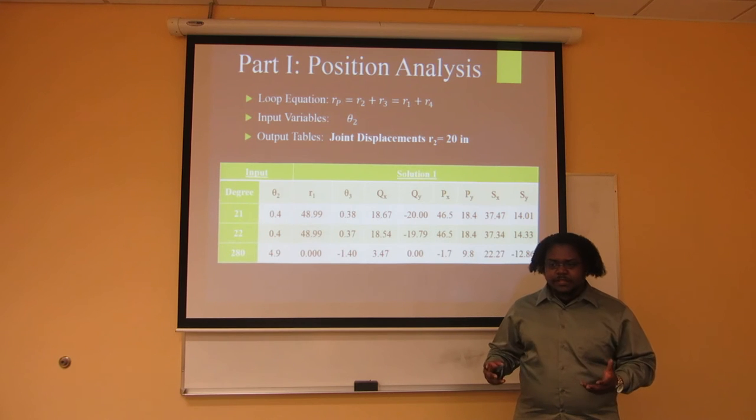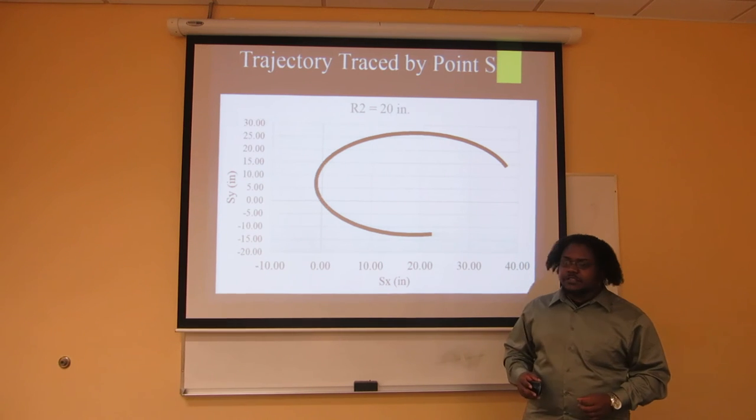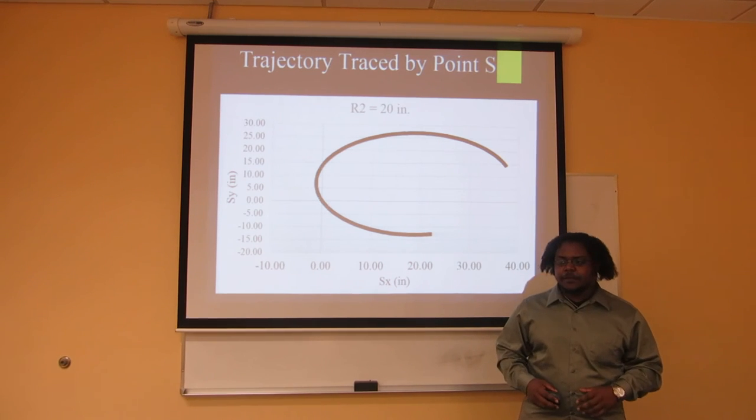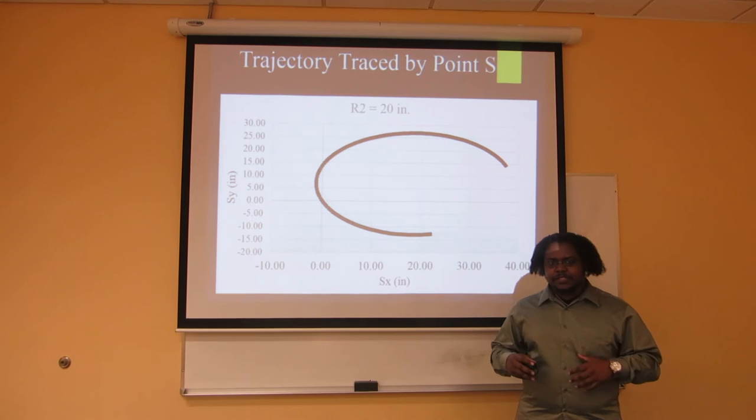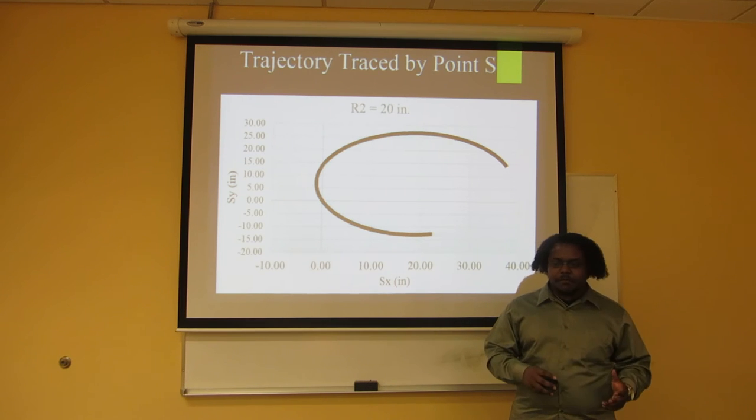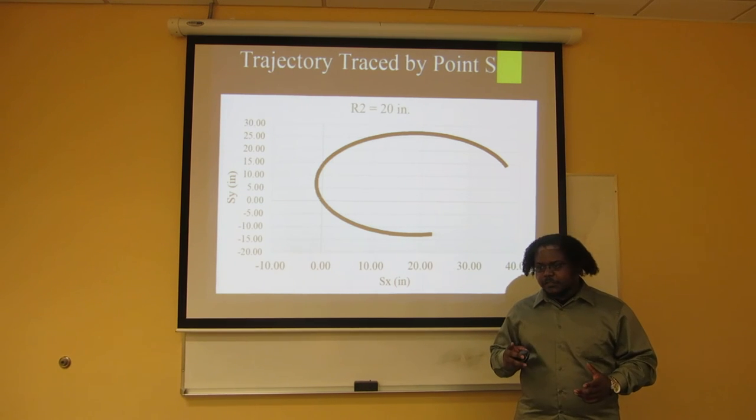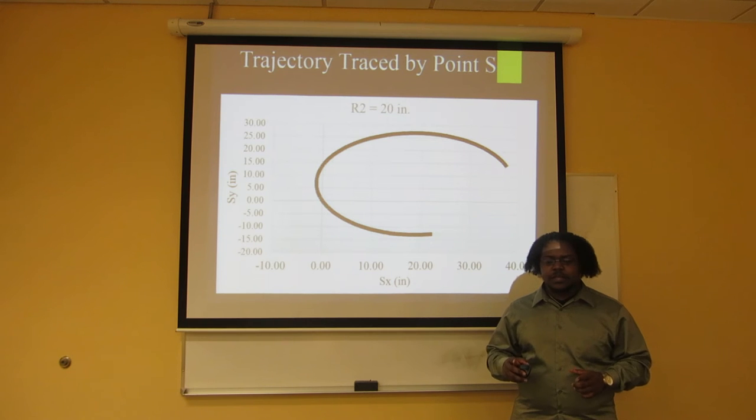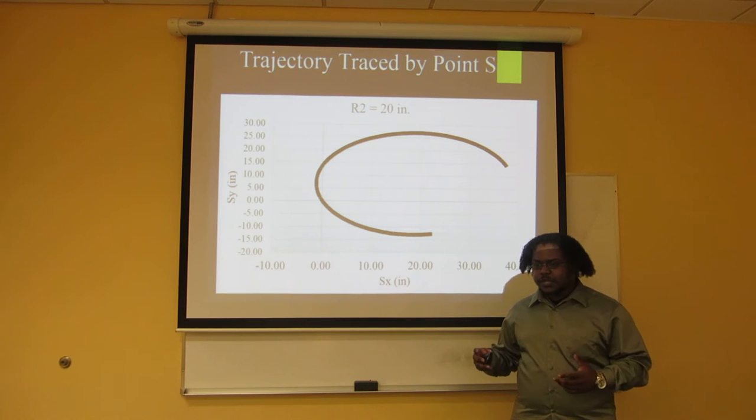For this, the length of R2 is equal to 20 inches. The 280 degrees is for the minimum R1 length. This trajectory of point S is tracked by using the points of S from the maximum R1 value to the minimum value, and this is specialized especially for the R2 values equal to 20 inches.